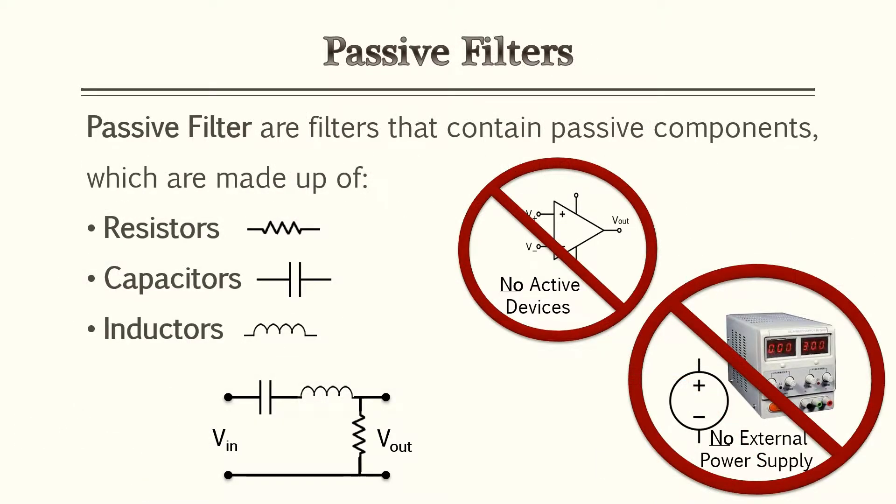What defines a passive filter? A passive filter contains passive components which are made up of resistors, capacitors, and inductors. Usually you can tell if it's a passive filter if it doesn't have an external power supply or any active components such as op amps.